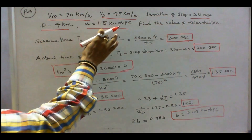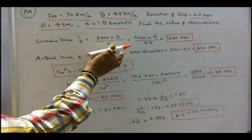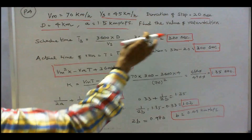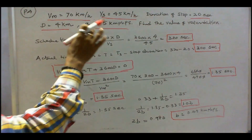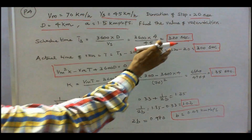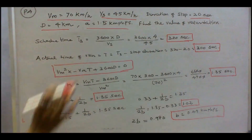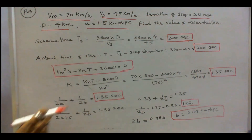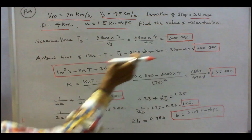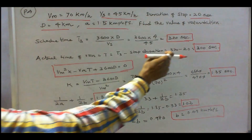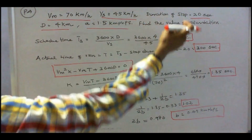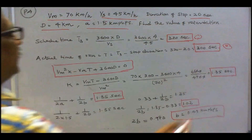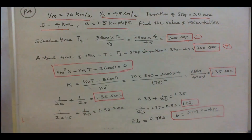We know that schedule time equals 3600 times d divided by schedule speed, that is 3600 times 4 divided by 45, which equals 320 seconds. The actual time of run T equals schedule time minus stop duration, that is 320 minus 20, which equals 300 seconds.